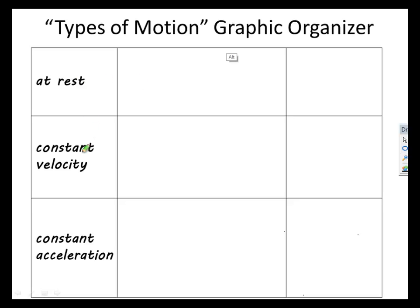at rest, constant velocity, and constant acceleration. We're going to look at what the graphs for these three types of motion would look like, and we're going to take a look at the relevant equations.